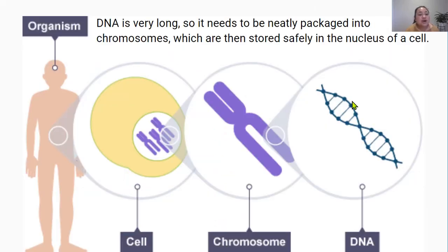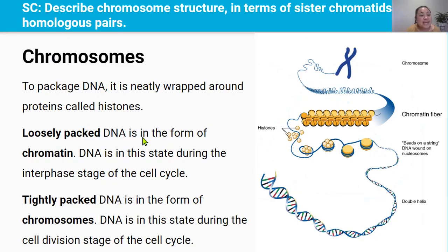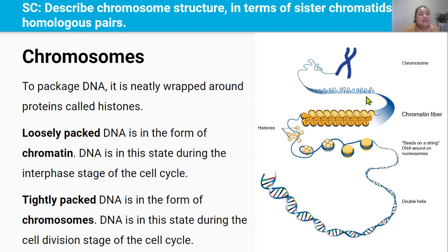The DNA in all of your cells is approximately 2 meters long. Because it's very, very long, it needs to be neatly packaged into either chromatin or chromosomes, which are then stored safely in the nucleus of cells. To package DNA, it is neatly wrapped around proteins called histones. If it's loosely packed, then the DNA is in the form of chromatin. DNA needs to be loosely packed if proteins need to come in to read the DNA or replicate it during DNA replication. If DNA is tightly packed, then the DNA is in the form of chromosomes. DNA needs to be very tightly packed if the cell is undergoing cell division either by mitosis or meiosis.